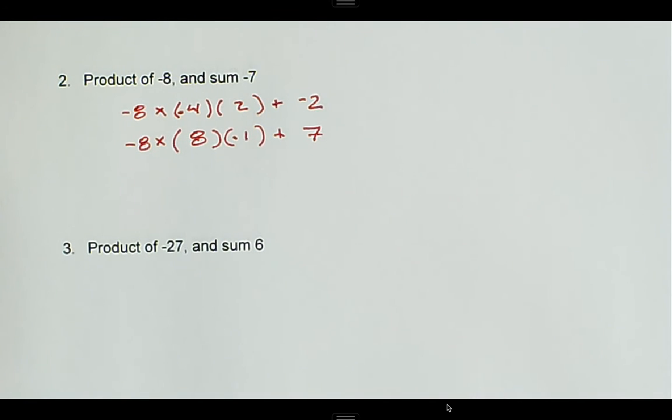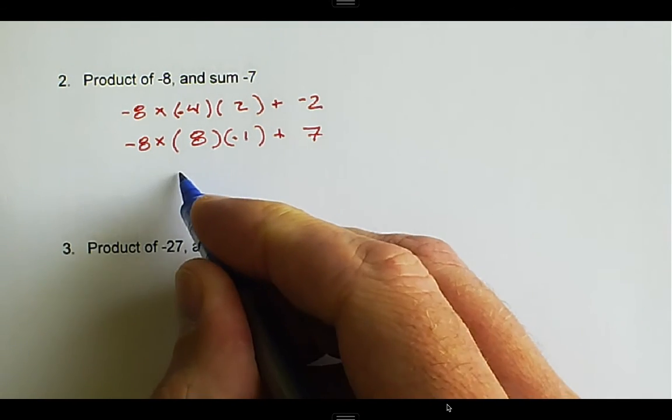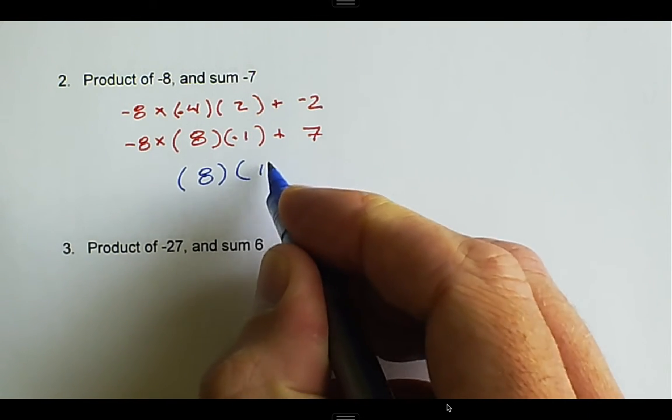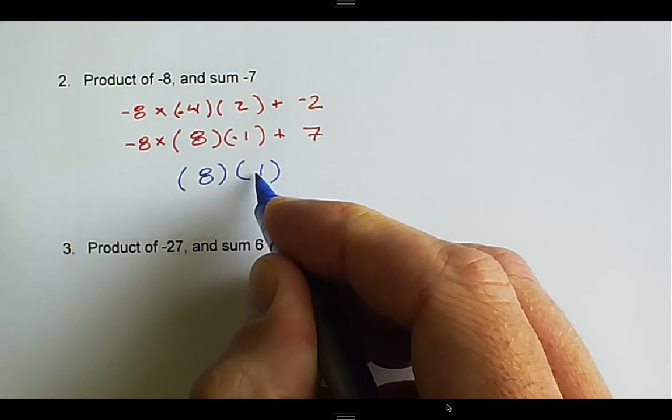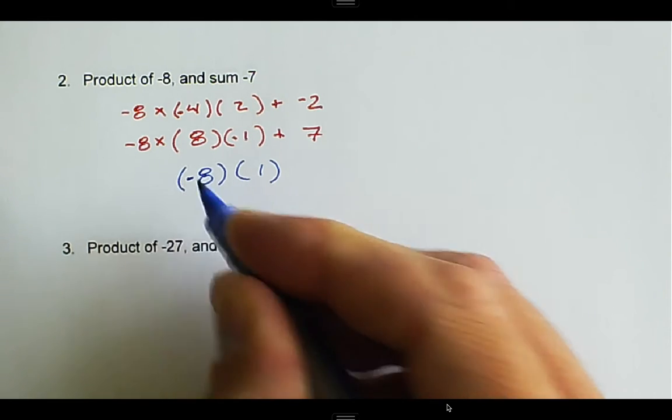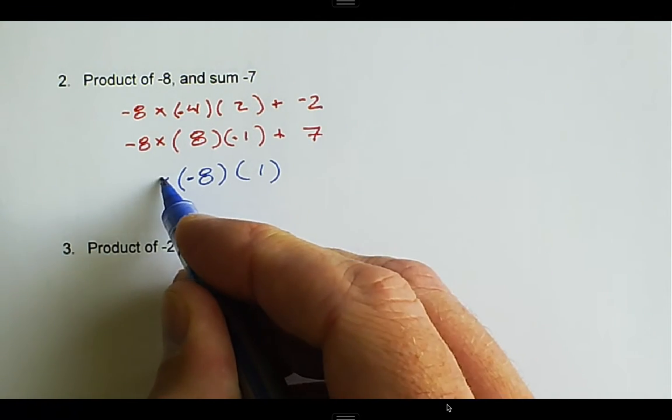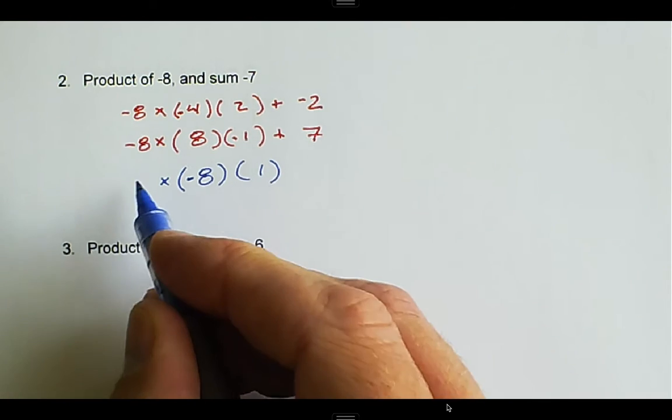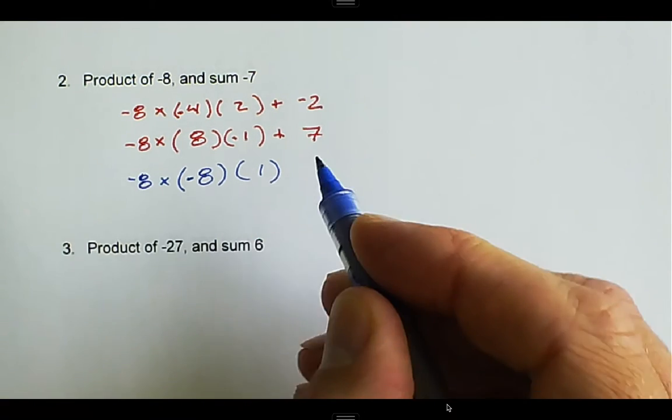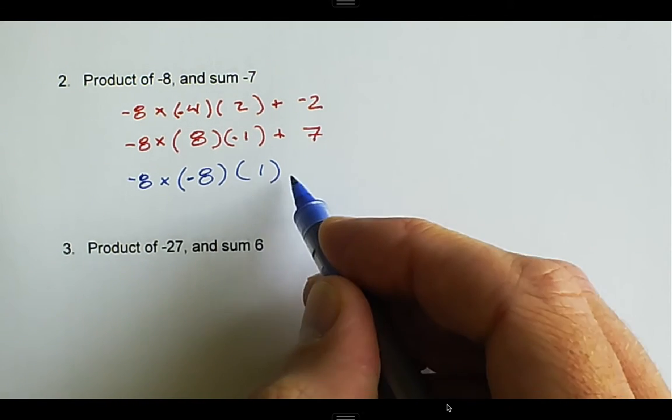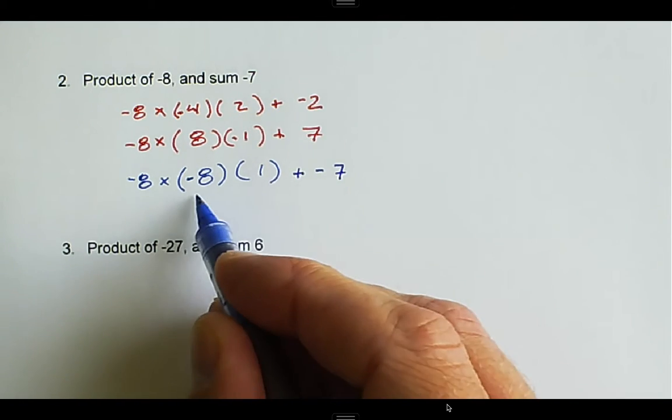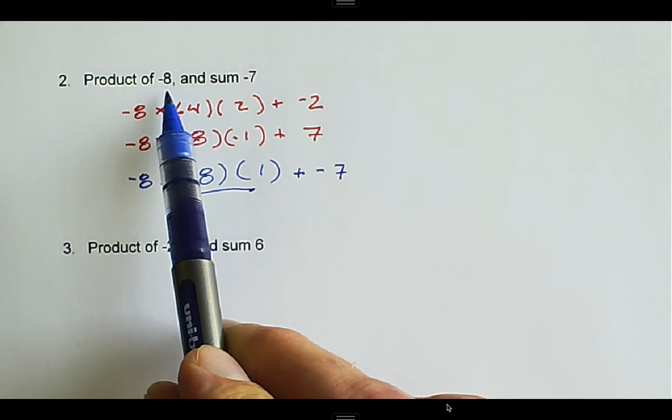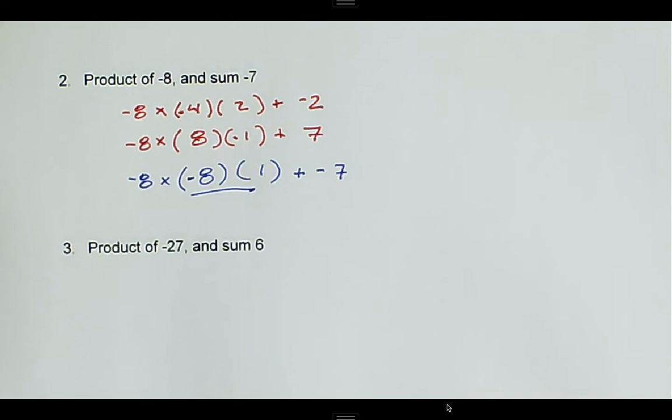I can recognize that if we use the same two numbers, which are 8 and 1, but then we change the sign, make the 1 positive and make the 8 negative. When we multiply those together, negative 8 times 1 is negative 8, and negative 8 plus 1 is negative 7. So negative 8 and 1 are the numbers that multiply to negative 8 and add to negative 7.